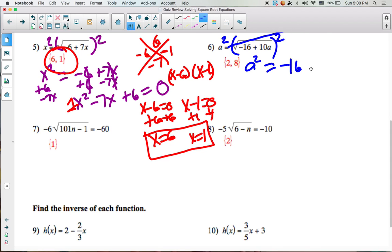Again, I have an a squared, so that's quadratic. I want to move everything over to the left side. I'm going to subtract the 10a and add 16. That gives me a squared minus 10a plus 16 equals 0.